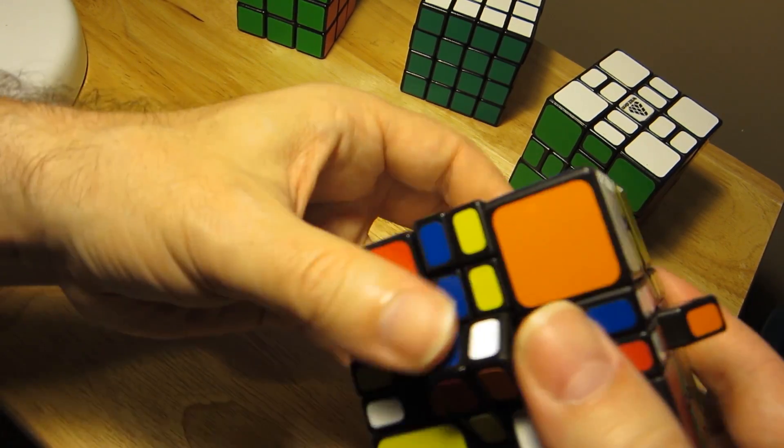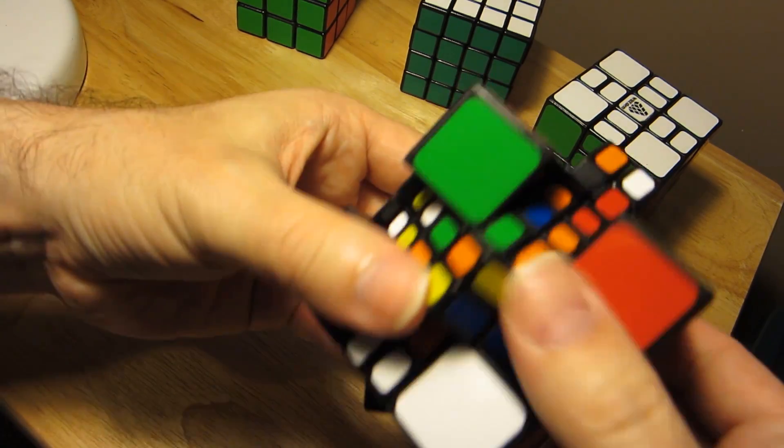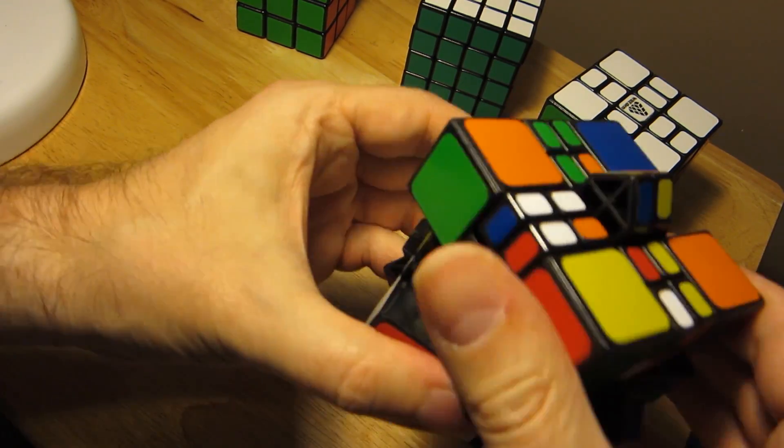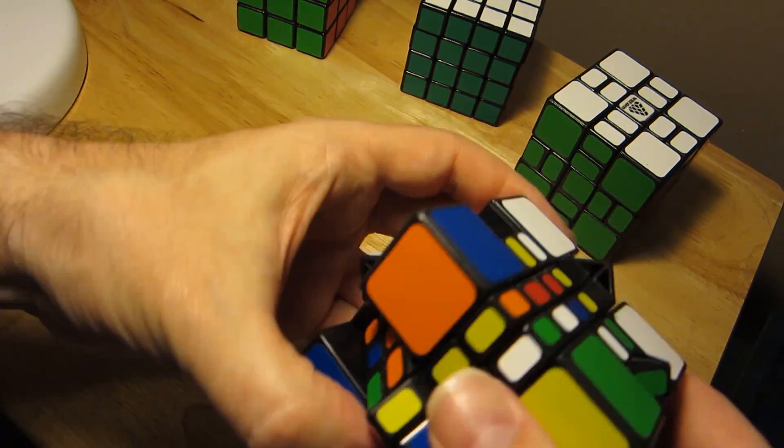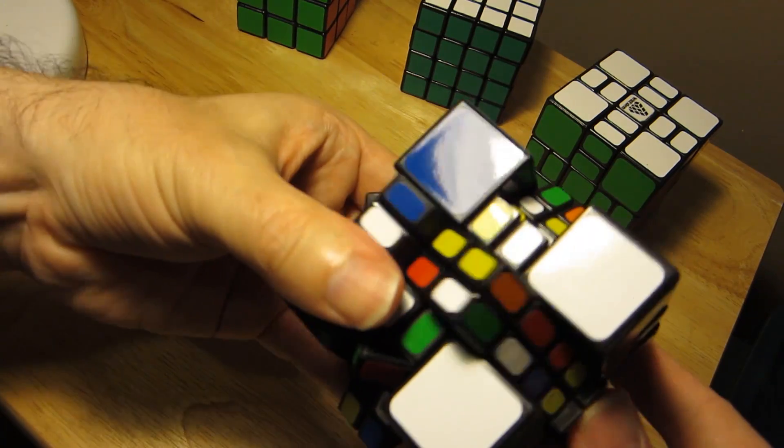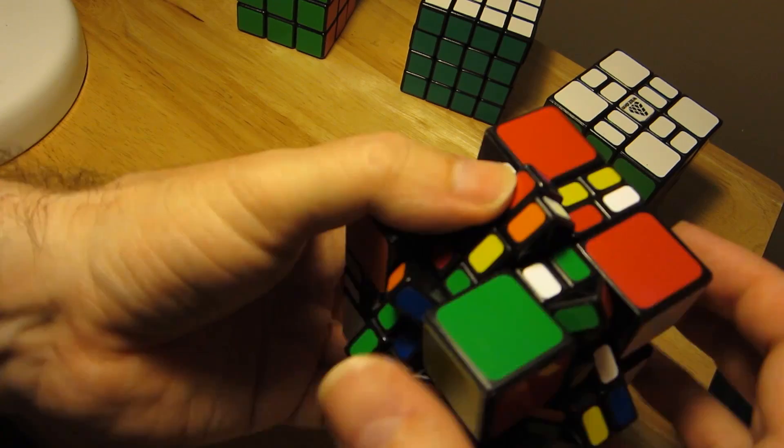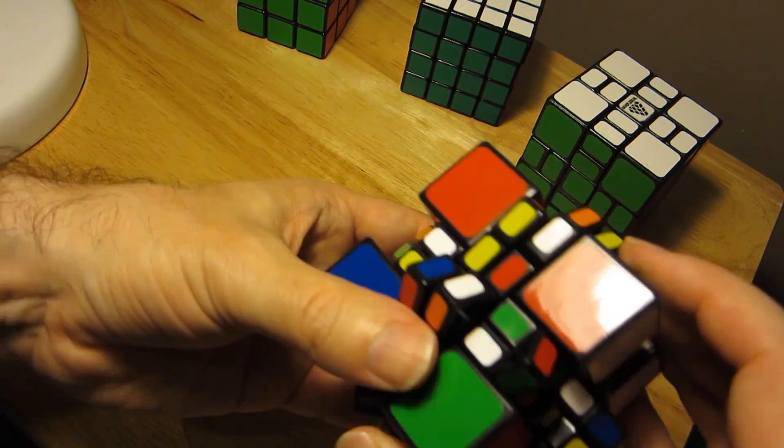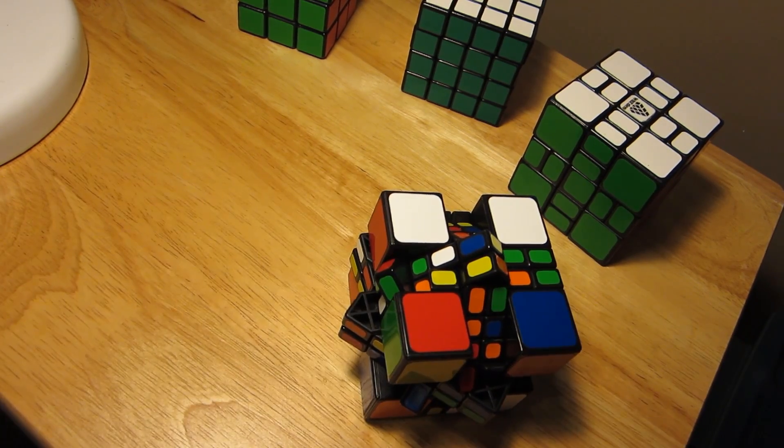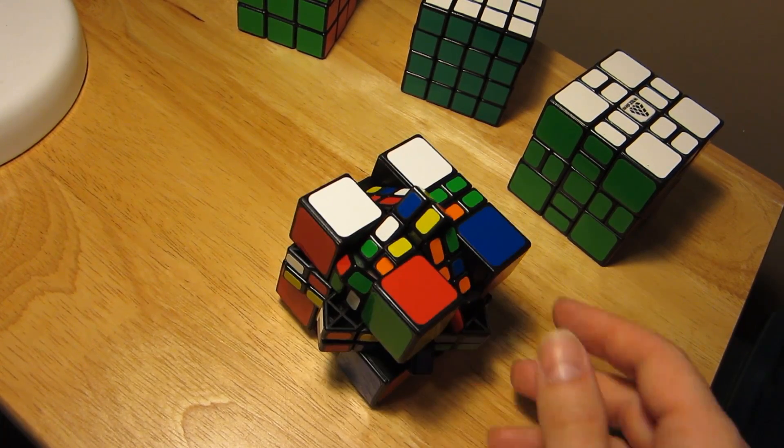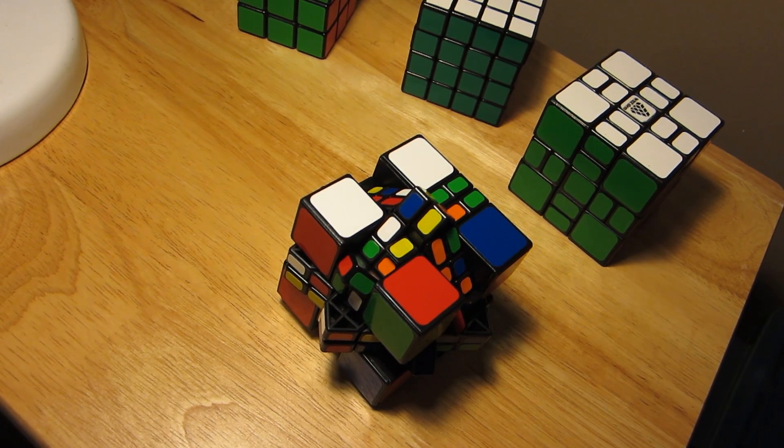You will find you can't really get much scrambling on this compared to, say, the 3x3, because the puzzle starts to get blocked. Certain positions of the corners won't allow you to rotate the inner layers anymore. Okay, so now my puzzle is all nicely scrambled up, and the next bit will be restoring it to cubic form.